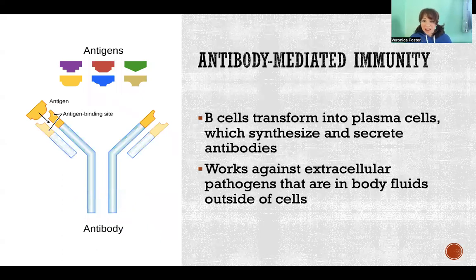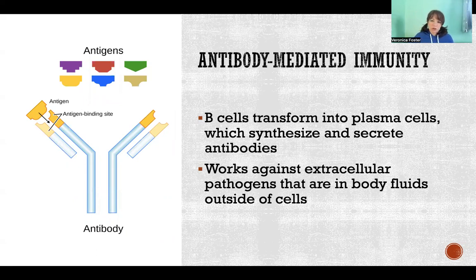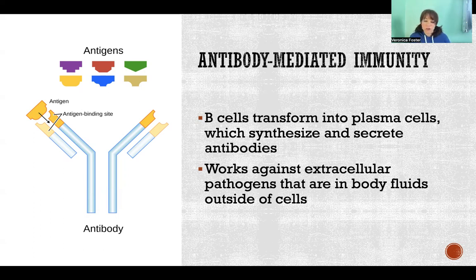So B cells, once they have differentiated — meaning that they have found the thing they're going to kill forever — they start producing antibodies. These are proteins that look like a Y shape, and they target that exact pathogen they are designed to destroy. Once a B cell has differentiated, they are properly now called plasma cells. Once that happens, they synthesize and secrete antibodies to kill that particular pathogen.